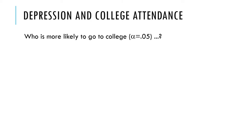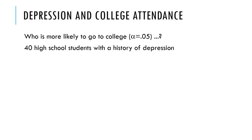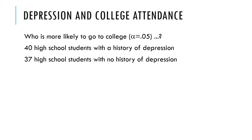The example here is about who is more likely to go to college — people with a history of depression or people without. Let's say you tried to get 40 people in each group, but some people dropped out, and you ended up with only 37 in one group. This demonstrates that you don't always need equal n's to make these tests work. The dependent variable is going to college — yes or no, a binary outcome.